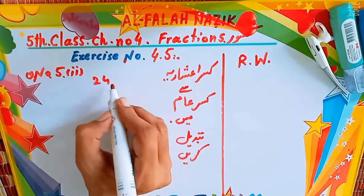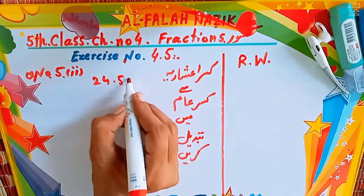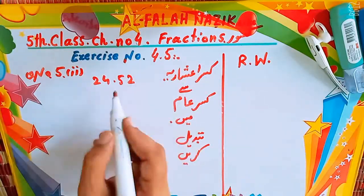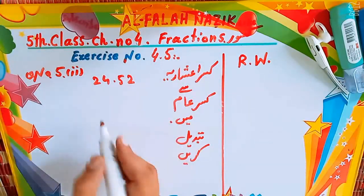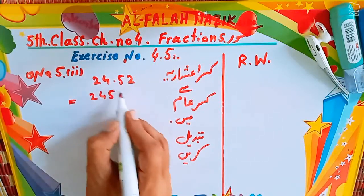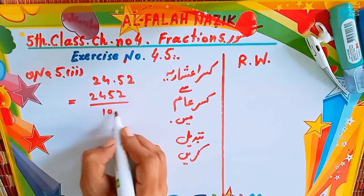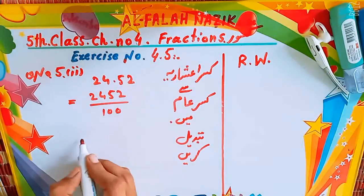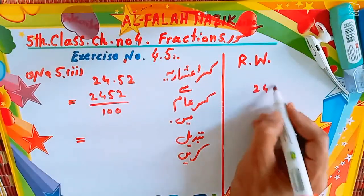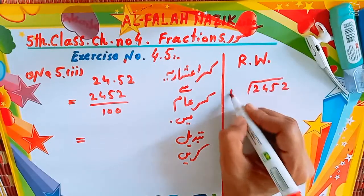24 point 5, 2 — تو یہ قصر اشاریہ میں ہے، اس کو بھی ہم نے قصر عام میں تبدیل کرنا ہے۔ دیکھئے، اگر چوبیس سو باون بٹا سو ہو جائے گا تو آپ کو اس کو ڈیوائیڈ کر دینا ہے — چوبیس سو باون کو سو پہ ڈیوائیڈ کریں گے۔ (This decimal number needs to be converted to a common fraction: 2452 divided by 100.)